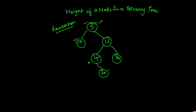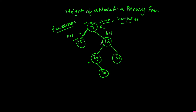We will start from the root node, and every time we have a variable — let's call it height — every time we go left or right, we will increment the height by 1. So from root, we go here and increment height to 1. From 15, when we go to the left, the height would be 2. And once we find the node, we will return the height. So if we are finding 30, the height would be 3, and once we find the node, we return the height.